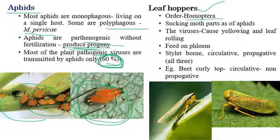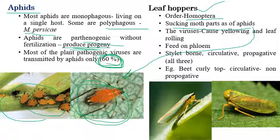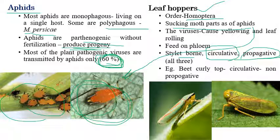The second important vector is the leafhopper, belonging to the group Homoptera. Leafhoppers consist of sucking mouthparts, similar to aphids. They cause different types of diseases including leaf rolling and leaf curling. Leafhoppers are stylet-borne, circulative, and propagative vectors. Beet curly top virus is also transmitted by leafhopper in a circulative, non-propagative manner.